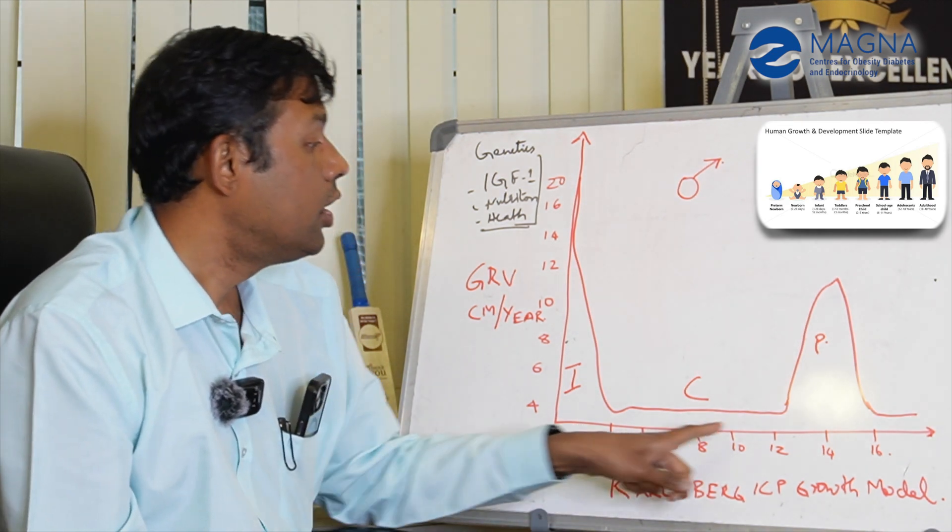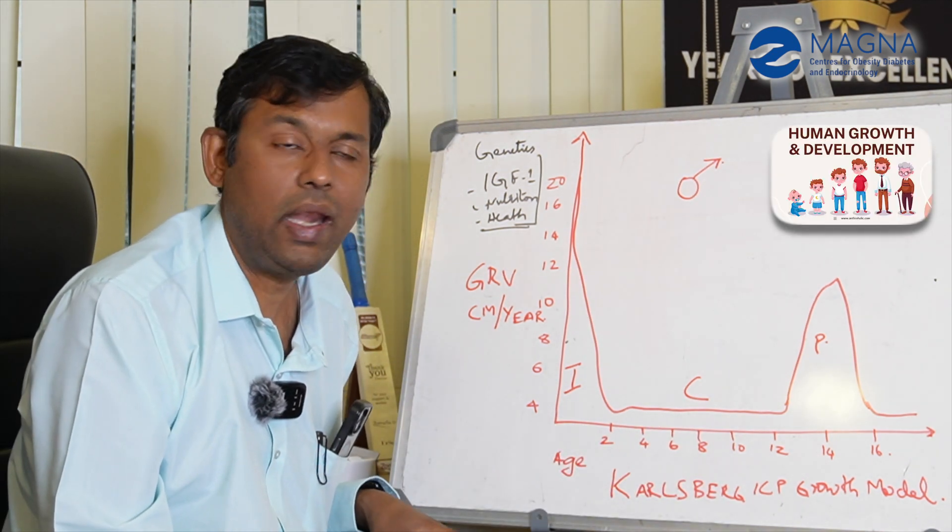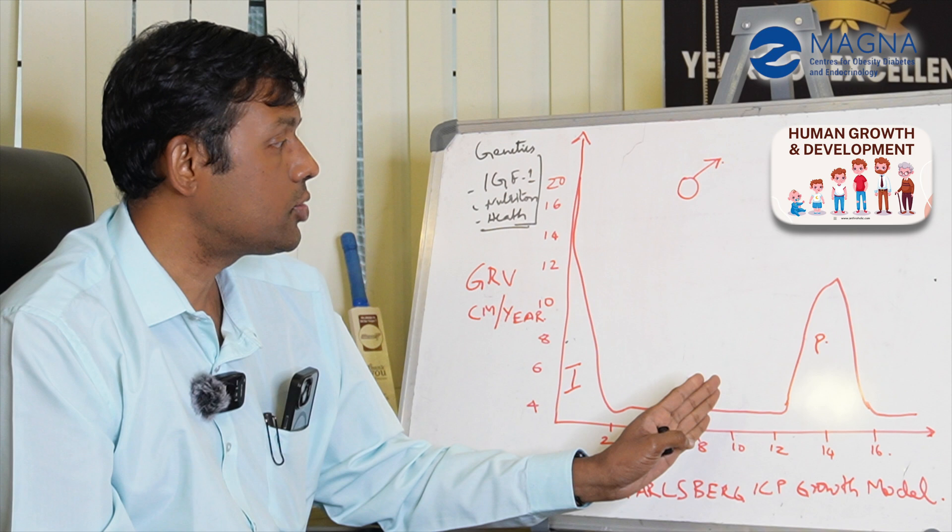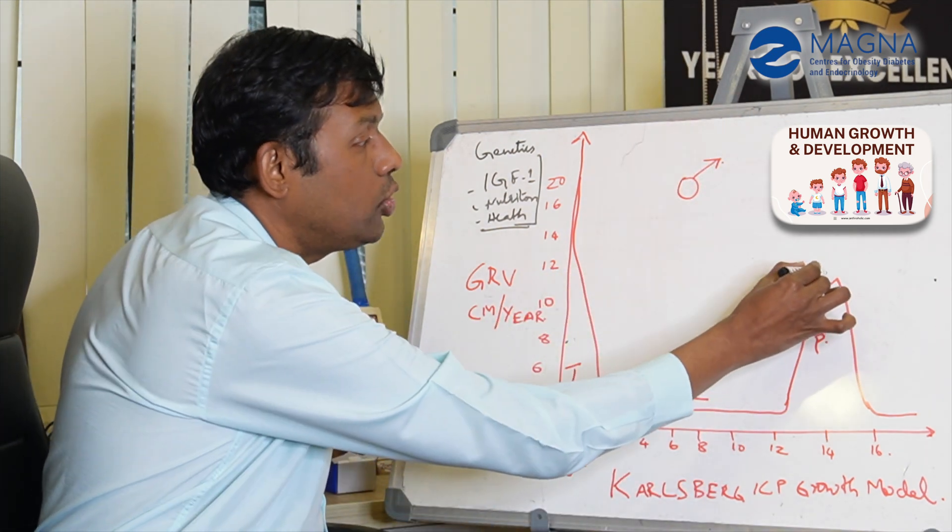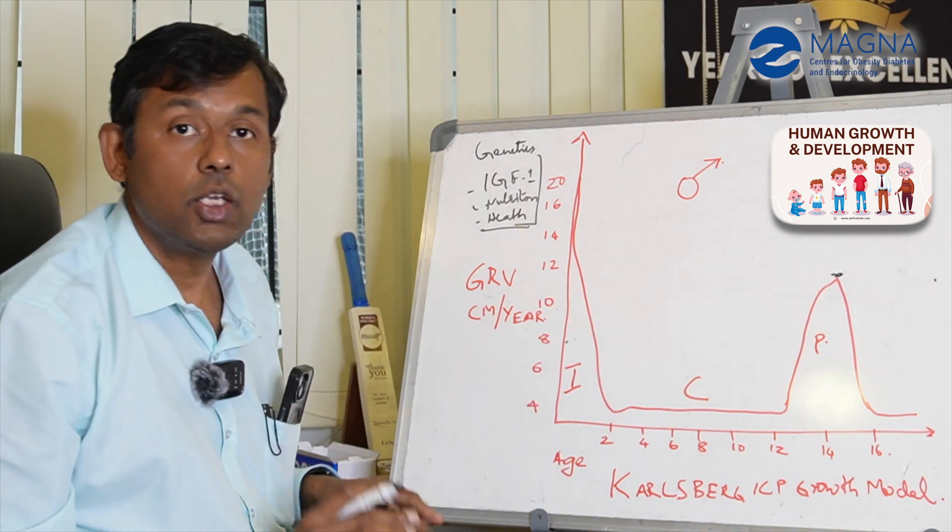This is especially a boy who enters puberty at the age of twelve. Once that boy enters puberty, there is a growth spike again. It goes to a maximum of about 10 to 12 centimeters per year.